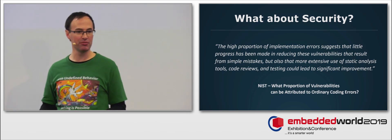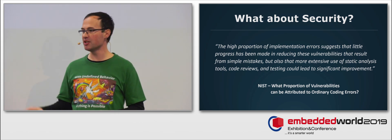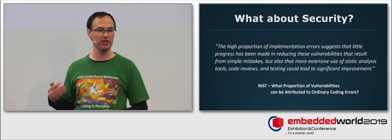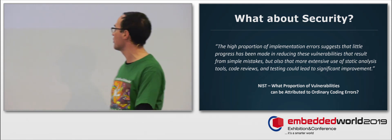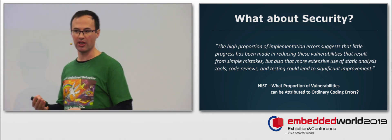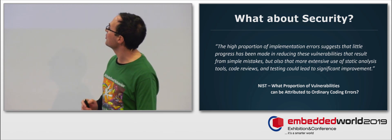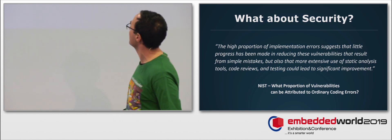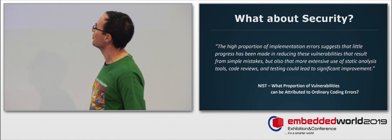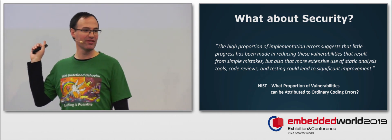So, in all the problems that I mentioned before, all the goals, there are general quality issues for software, whatever your language. A legitimate question is how much of that relates to security. And it turns out that quality of software is really a prerequisite for security, and that's what these NIST researchers said back last year in a report after having examined eight years of the national vulnerability database. They say the high proportion of implementation errors suggest that little progress has been made in reducing these vulnerabilities that result from simple mistakes, but also that more extensive use of static analysis tools, code reviews, testing could lead to significant improvements.